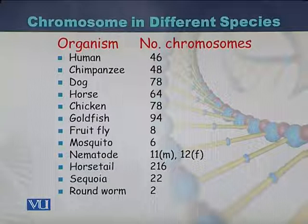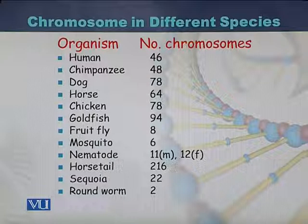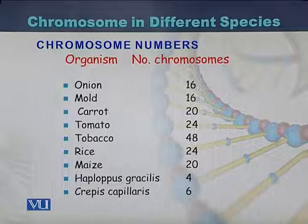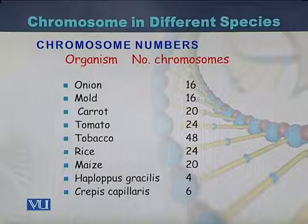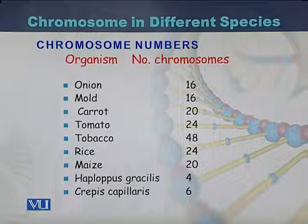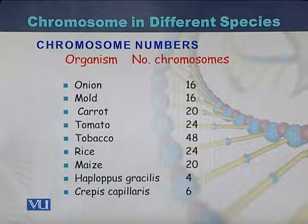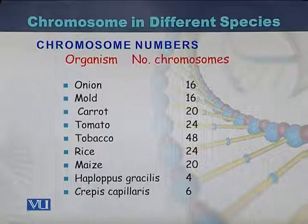Looking at chromosome numbers in different organisms: humans have 46 chromosomes, chimpanzee 48, dog 78, horse 64, chicken 78, goldfish 94, fruit fly 8, and mosquito 6. These are the chromosome numbers in different organisms.